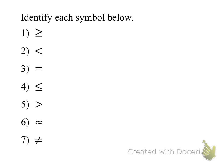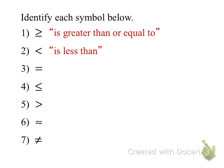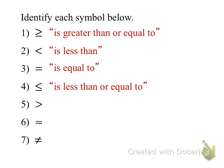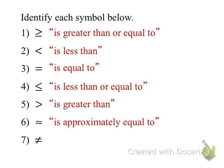Let's go back through. Number one means 'is greater than or equal to.' Number two: 'is less than.' Number three: 'is equal to.' Number four: 'is less than or equal to.' Number five: 'is greater than.' Number six: 'is about' — either one, same thing. Number seven: 'is not equal to.' All of these signify a result. When you see it in writing, you will see the word 'is' with it.